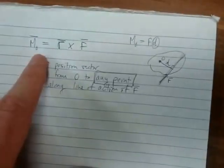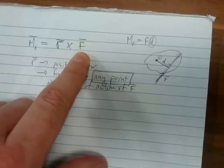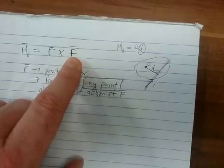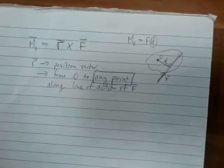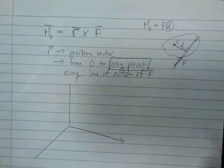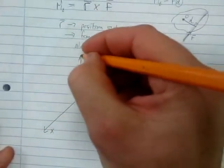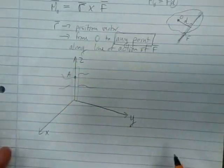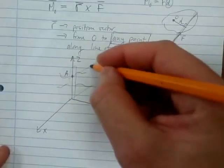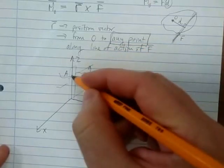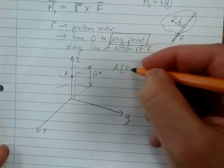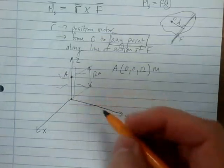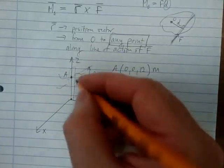To calculate the moment, we need position vector r and force F both in Cartesian vector form. Looking at the drawing — x, y, z axes, and the tree goes up. Point A is at the top; the height is 12 meters. So the coordinates of A are (0, 0, 12) — zero in x, zero in y, 12 in z.